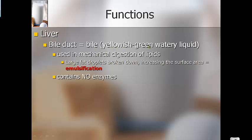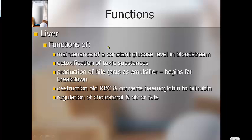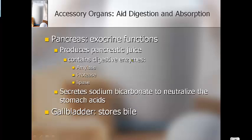Your liver creates bile — a yellowish-green watery liquid used to break down fats, a process called emulsification. The liver also maintains your glucose levels in the bloodstream, removes toxins and poisons, converts old red blood cells into bilirubin to eliminate them, and helps regulate cholesterol and other fat levels. Your pancreas creates amylase to break down carbohydrates, protease to break down proteins, and lipase to break down fats. It also secretes sodium bicarbonate into your stomach to help relieve heartburn when stomach acid builds up too much.